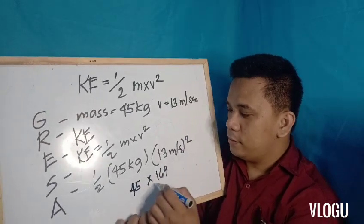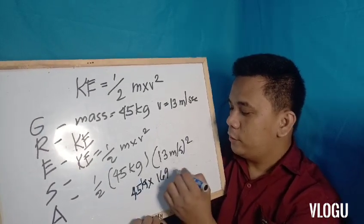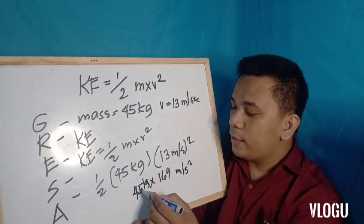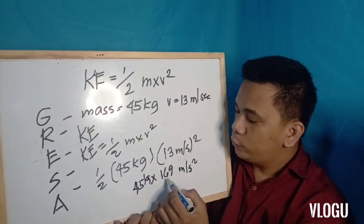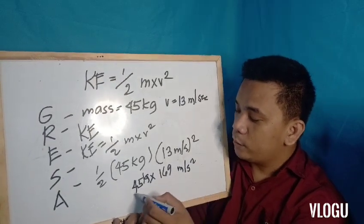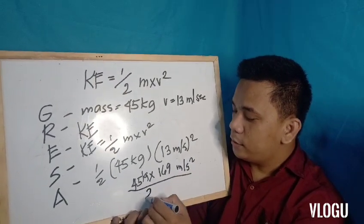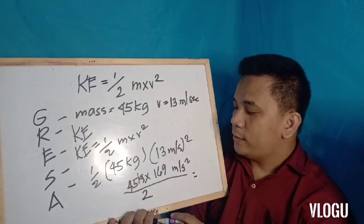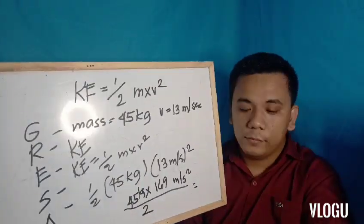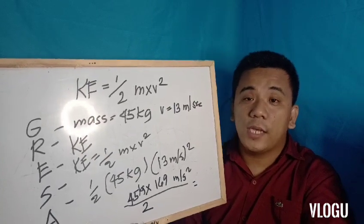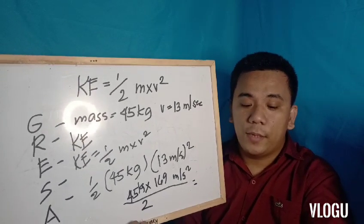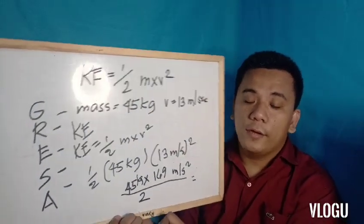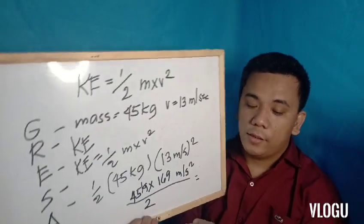We have 169 meters per second squared. Then we multiply 45 kilograms by 169 meters per second squared, divided by 2. So we have 7,605 divided by 2.